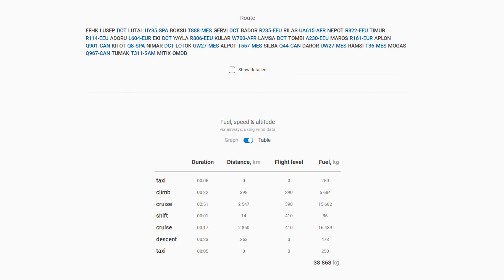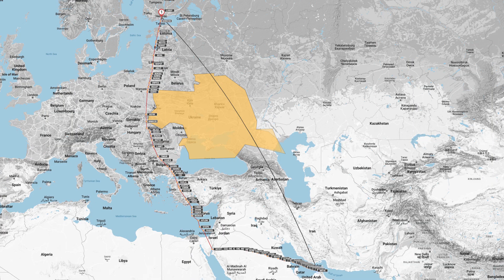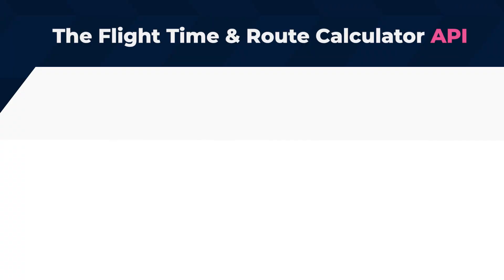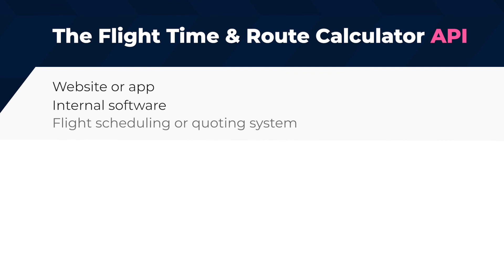Then you can check the route, fuel burn on every stage of the flight, and the map showing your flight via airways, including countries and FERS avoidance. The flight time and route calculator is available via API for your website or app, internal software, flight scheduling, or quoting system.